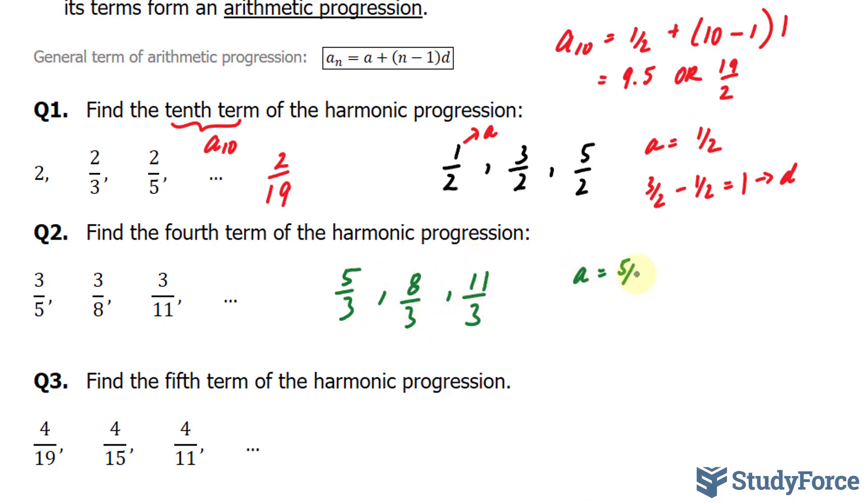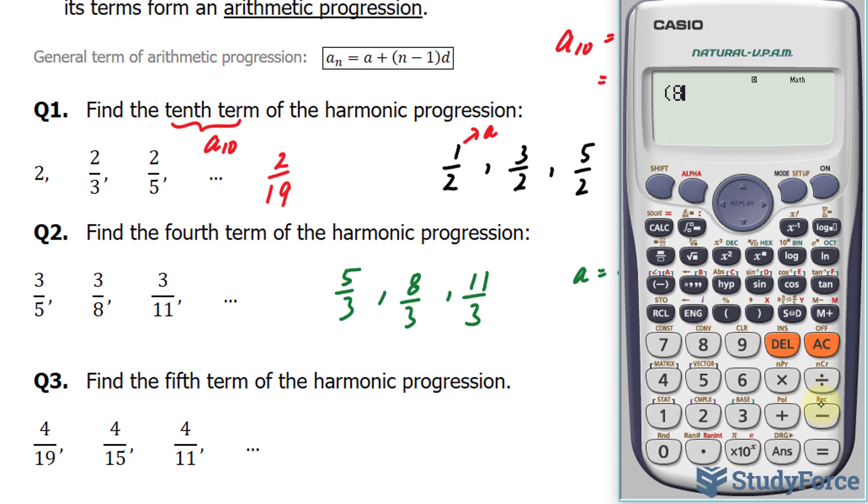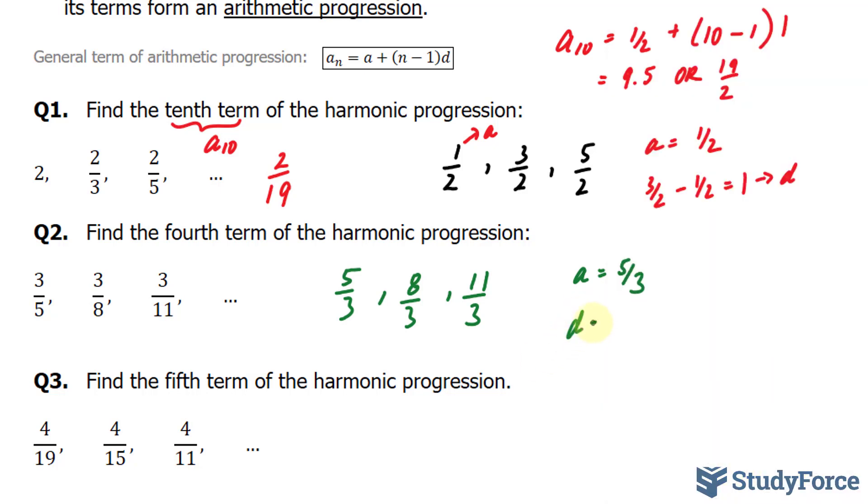Our a is 5 over 3. Our common difference will be this subtracted from that. 8 over 3 minus 5 over 3. This gives us 1, a difference of 1.